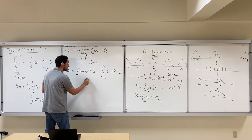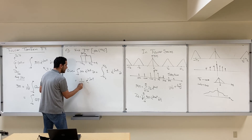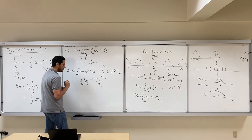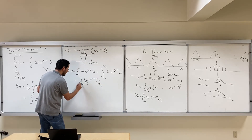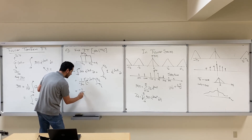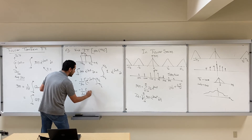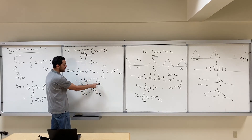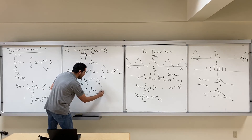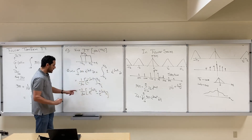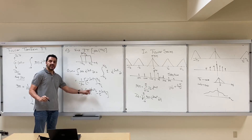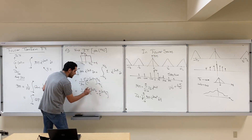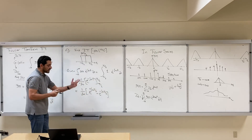Integrating this, we get the same exponential divided by minus jω, and then substitute the limits of integration. This gives us minus 1 over jω times [exponential(minus jω τ/2) minus exponential(plus jω τ/2)]. We can include the negative sign inside and reverse the two terms, so the negative sign is removed and the terms are swapped.